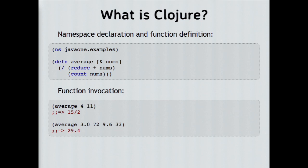This is a dynamically typed language, so we don't have any type declarations. If I call the function average with exact integer arguments, I get an exact answer — in this case a ratio. If I call it with floating point numbers, I get a floating point result. I could also do that with arbitrary precision integers, big decimals, or anything else.